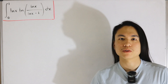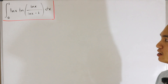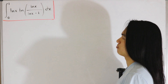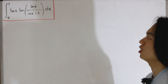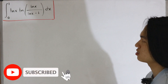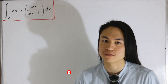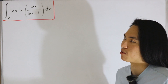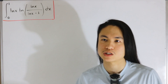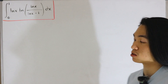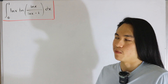Welcome back. Today's video is a definite integral — a natural log frenzy. We have the natural log of x multiplied by the natural log of the natural log of x, divided by the natural log of x minus 1, dx. We'll be doing some u-substitution, but mostly integration by parts. At one point we'll need to apply L'Hôpital's rule, though I'll skip that step as it's straightforward.